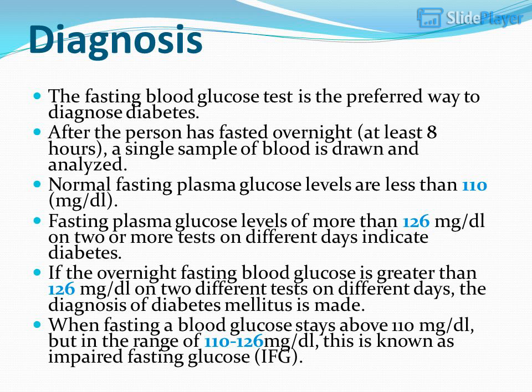Diagnosis: The fasting blood glucose test is the preferred way to diagnose diabetes. After the person has fasted overnight (at least 8 hours), a single sample of blood is drawn and analyzed. Normal fasting plasma glucose levels are less than 110 mg/dL. Fasting plasma glucose levels of more than 126 mg/dL on 2 or more tests on different days indicate diabetes. When fasting blood glucose stays above 110 mg/dL but below 126 mg/dL, this is known as impaired fasting glucose.